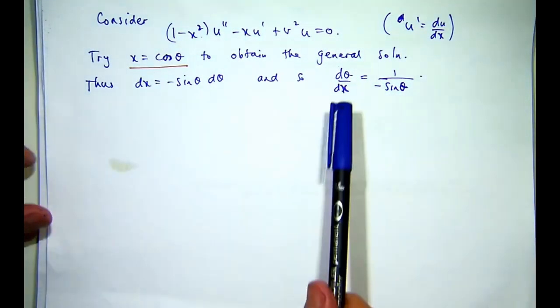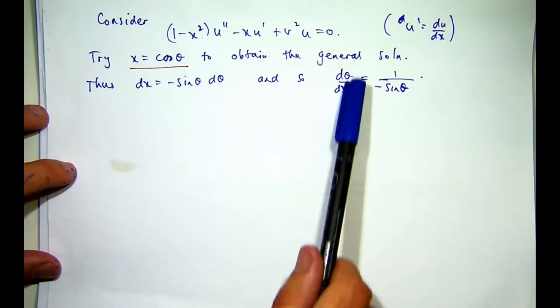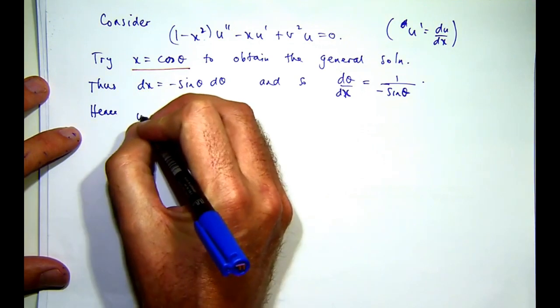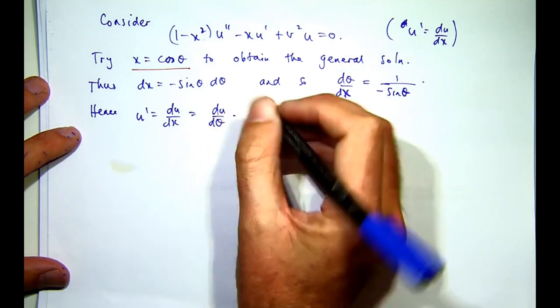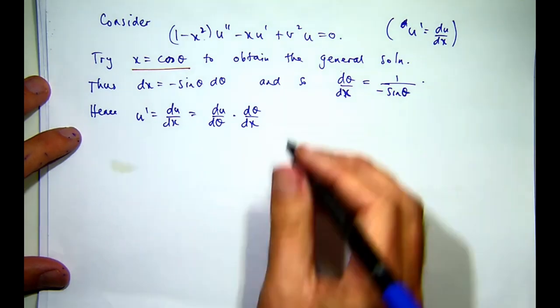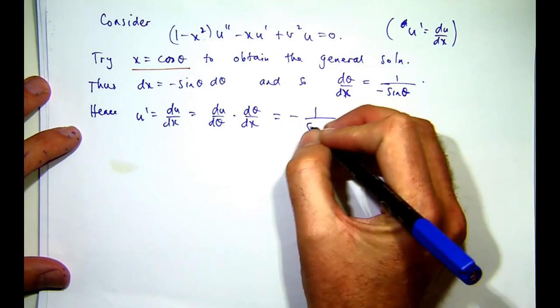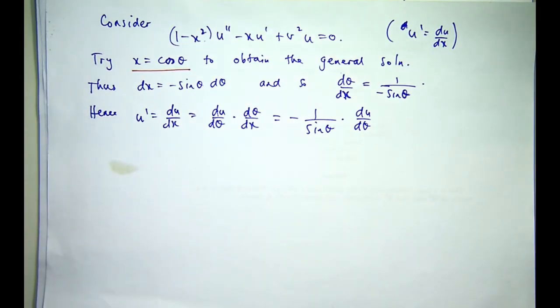So we're making a change of independent variable. Now what we're trying to do is calculate d u d x or u dash d squared u d x squared in terms of these sorts of derivatives, d u d theta, et cetera. So now just using the chain rule, I can write this as the following product. And from up here, I can replace this with the following. So I now essentially have d u d x in terms of d u d theta and sine theta. So that's easy to substitute out there.